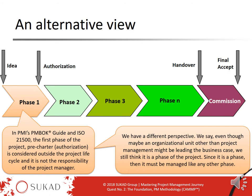Should it be managed by a project manager? We say yes. Our view is that as soon as the idea is approved at stage gate 1, the organization must appoint two people: a project sponsor and a project manager. In the first quest we discuss the different roles — what the project sponsor, business owner, project owner, and project manager mean, and their roles and responsibilities. You can refer back to the previous quest for that information.